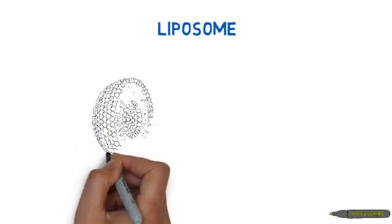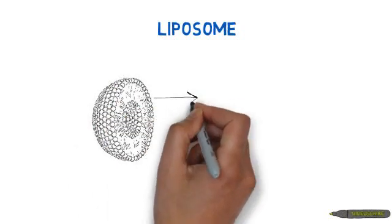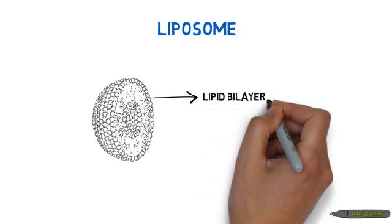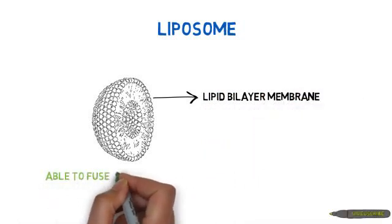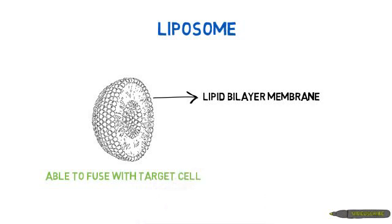Liposomes are microscopic vesicles with a lipid bilayer outer wall, which resembles a cell membrane. They are capable of fusing with the target cell and releasing their contents into the host cell. They are non-toxic and therefore pose no harm to the target cells.